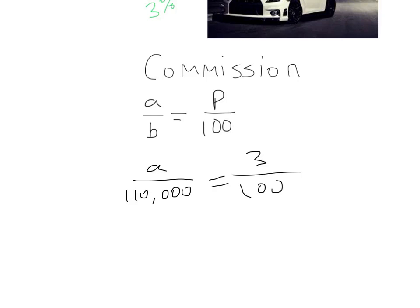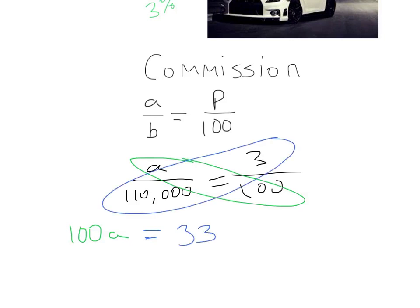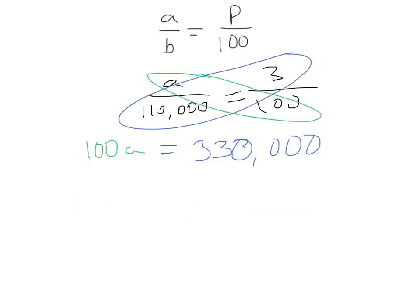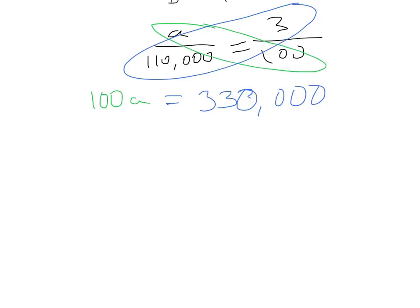So what can we do? Well, we can butterfly and say, well, A times 100 is 100A, and that's going to be equal to 3 times 110,000, 330,000. And then lastly, you've got to get A by itself, so divide by 100, divide by 100. It's effectively wiping out those zeros.